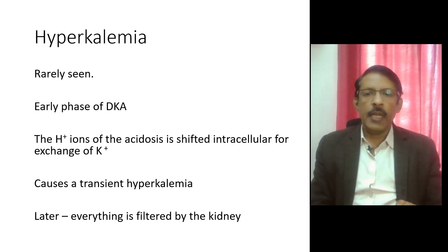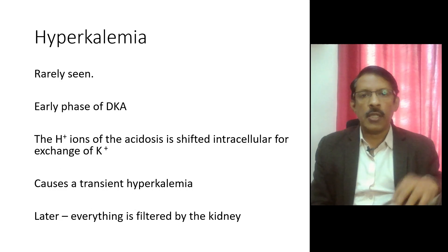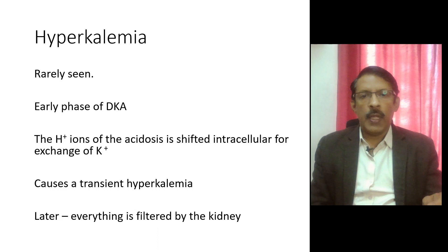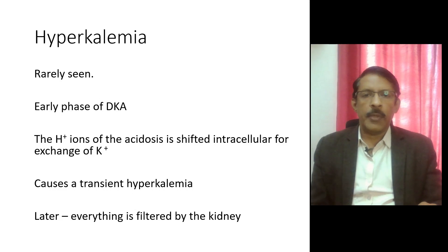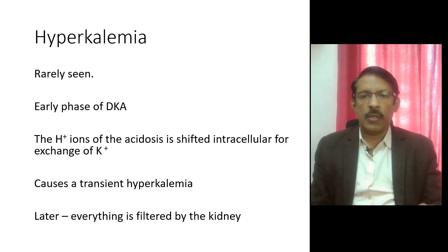Hyperkalemia is rarely seen in diabetic ketoacidosis. Whenever there is metabolic acidosis and excess of hydrogen ions, the hydrogen ions get pushed intracellular and the potassium ions from the intracellular component come to the extracellular component. So there could be a chance that in the early stages of diabetic ketoacidosis you may get hyperkalemia. This is a very transient state and whatever excess of potassium is there gets filtered by the kidney, so eventually you get into a eukalemic state. If a patient with diabetic ketoacidosis presents with hyperkalemia, assuming there are no other causes, then it is likely in the early stages.